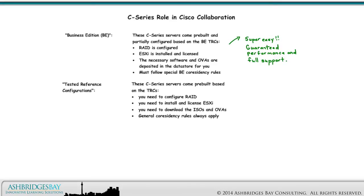The second option is Tested Reference Configurations. These C-Series servers come pre-built based on the TRCs. You need to configure RAID, install and license ESXi, download the ISOs and OVAs, and general co-residency rules always apply. Cisco C-Series servers based on TRCs are easy to deploy, fully supported, and also provide guaranteed performance.